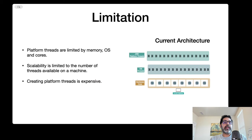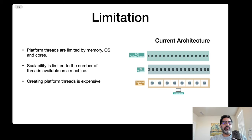As you've seen, platform threads are limited by memory, the operating system, and the number of cores. It also depends on how powerful your cores are - which is one reason for upgrades from M1 to M2 to M3. Essentially everything is limited by the total number of threads available on a machine. Creating a platform thread is a really expensive operation - 4 MB of memory, plus time for thread creation and cleanup.